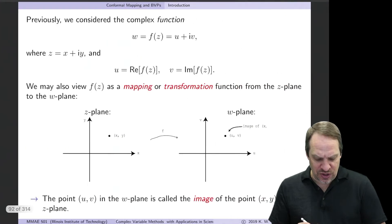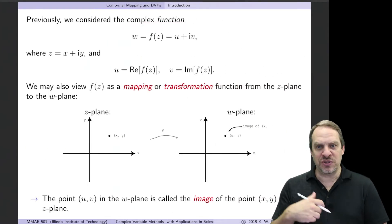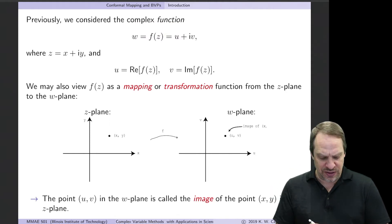To start, we have our complex function. In chapter one, we just viewed it as exactly that. w = f(z) = u + iv, real plus i times the imaginary part of our complex function. And it's a function of z, which is x + iy. U is just the real part. V, of course, is the imaginary part of f(z).